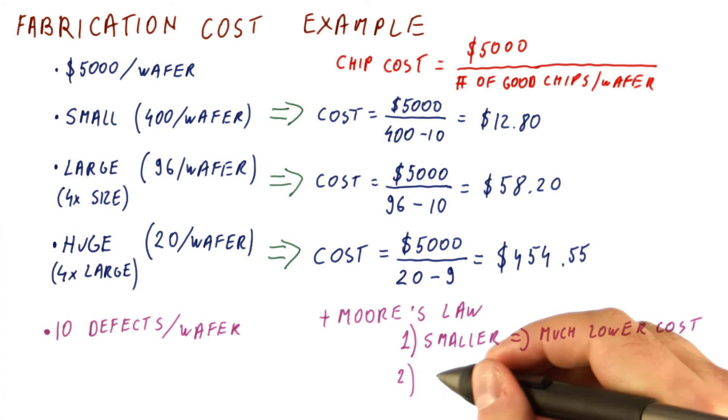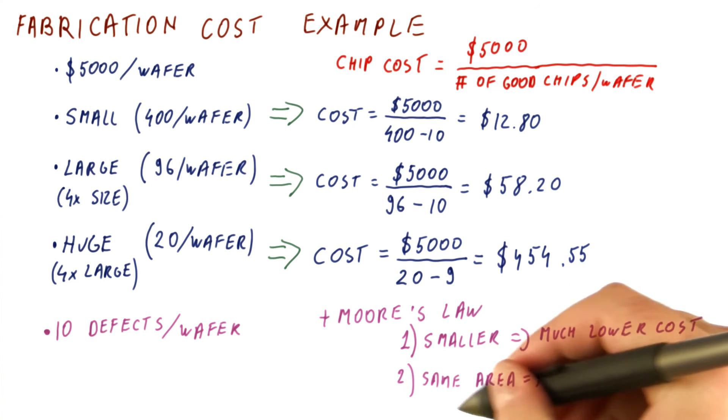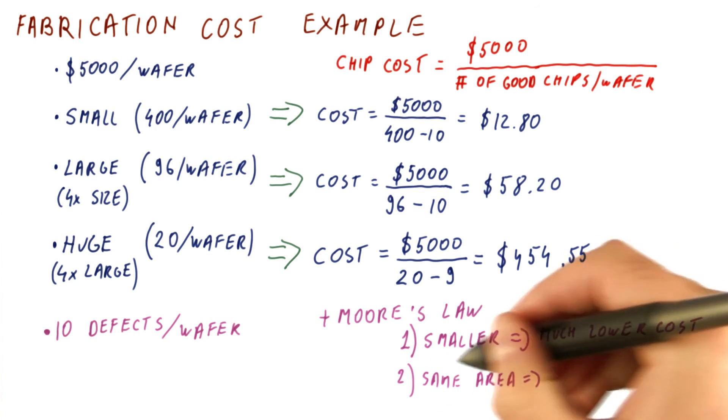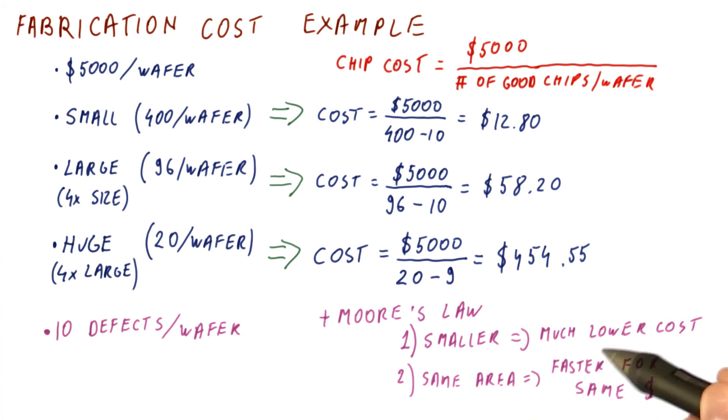The other way of benefiting from Moore's law is to build something new that has the same area as the old thing. And that means that we get something faster and more capable for the same cost that the old thing had.